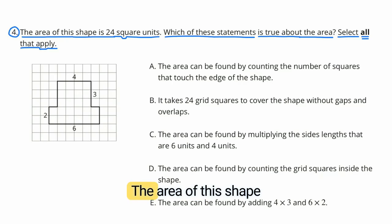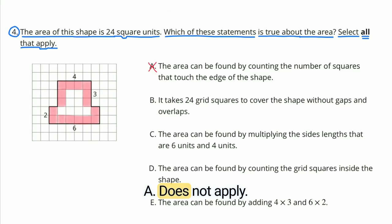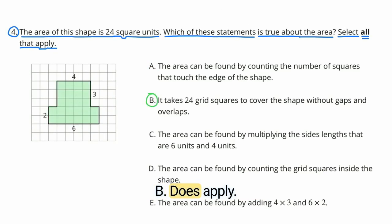The area of this shape is 24 square units. Which of these statements is true about the area? Select all that apply. A does not apply. This is more like finding the perimeter, not the area. B does apply. It takes 24 grid squares to cover the shape without gaps and overlaps. That is the area.